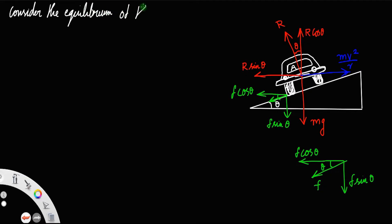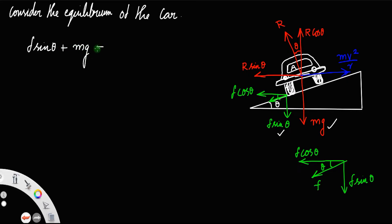Consider the equilibrium of the car. We have net upward forces equal to net downward forces. The forces acting in the downward direction are f sin theta and mg. So, f sin theta + mg equals the upward force, which is only R cos theta. Let us call that equation number one.